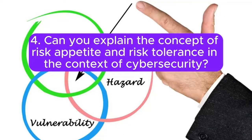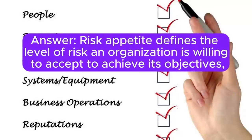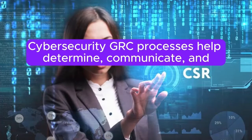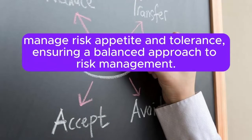Question 4: Can you explain the concept of risk appetite and risk tolerance in the context of cybersecurity? Answer: Risk appetite defines the level of risk an organization is willing to accept to achieve its objectives, while risk tolerance is the acceptable variation in achieving those objectives. Cybersecurity GRC processes help determine, communicate, and manage risk appetite and tolerance, ensuring a balanced approach to risk management.